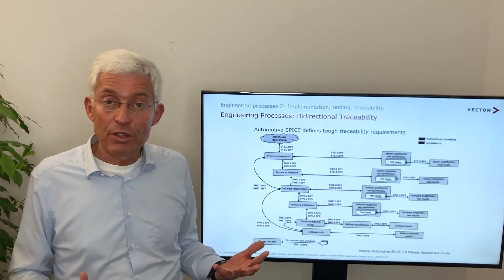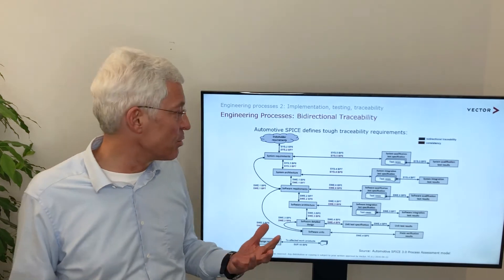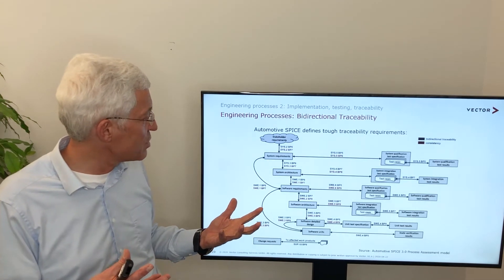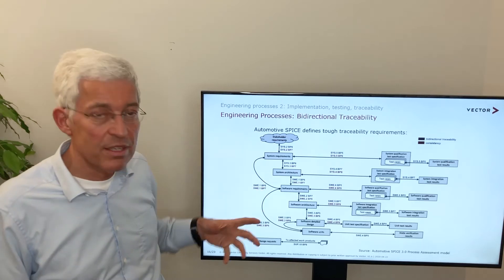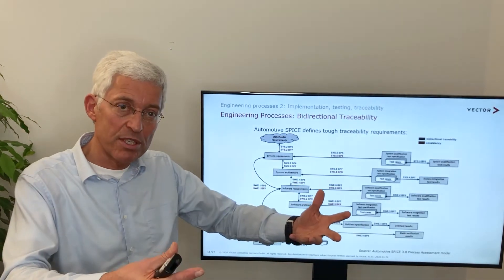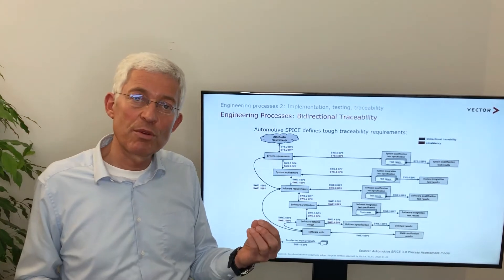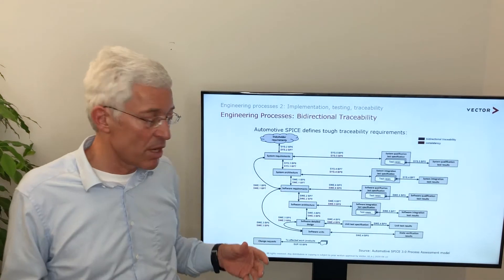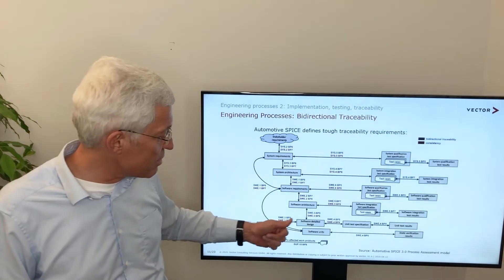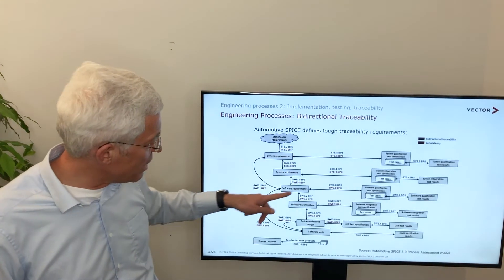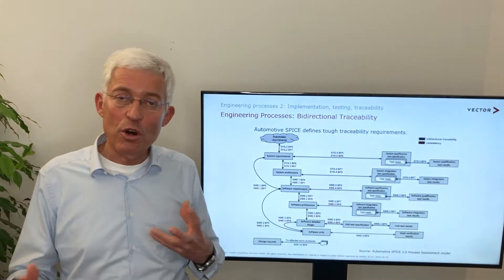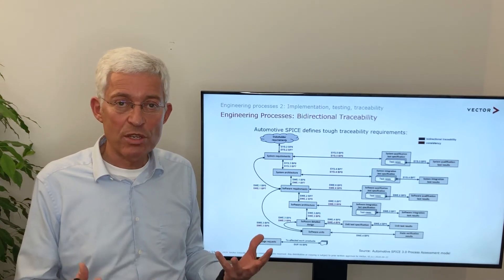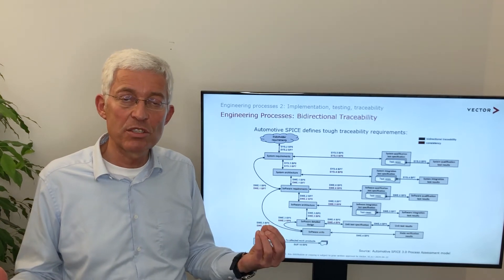A-SPICE has a lot of relationships and traceability in the model. We see the typical V-model as the underlying abstraction. On the upper left side we have the initial stakeholder requirements — what we get from outside, the market requirements — from which we derive system requirements. Then we go to the software requirements, then to the design and the units. You can already see a couple of useful traces. We always have to understand how much traceability is necessary, because too much makes things very expensive since we have to maintain it.